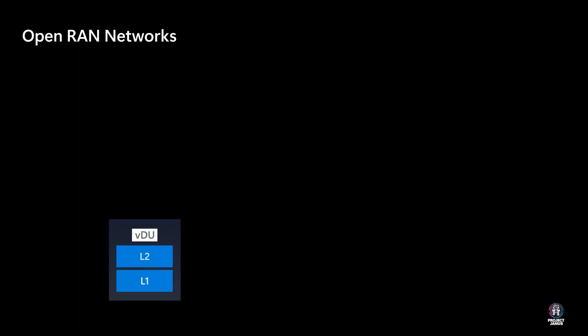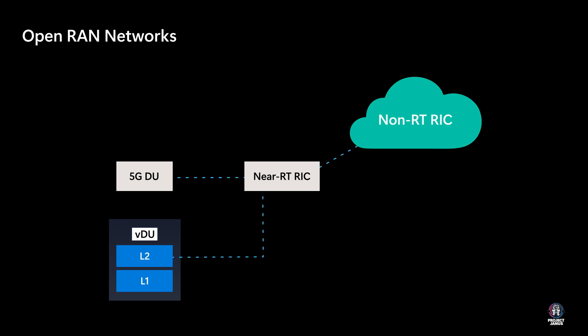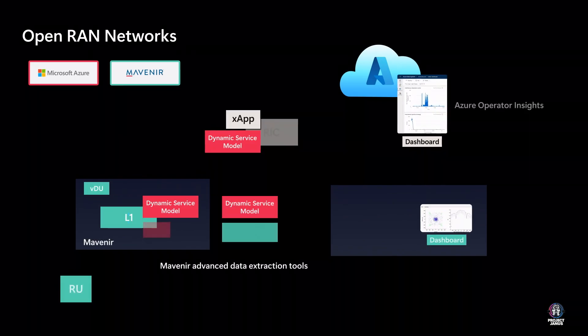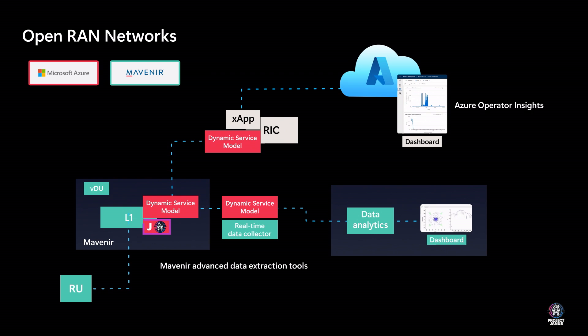In the world of open RAN networks, wireless service programmability is a driving force. While non-RT RICs and near-RT RICs leverage applications for enhanced control, extending programmability into the sub-1 millisecond window for RAN DU, especially at layer 1, presents challenges. Microsoft's programmable RAN platform introduces the dynamic service model framework with Janus to tackle these challenges.